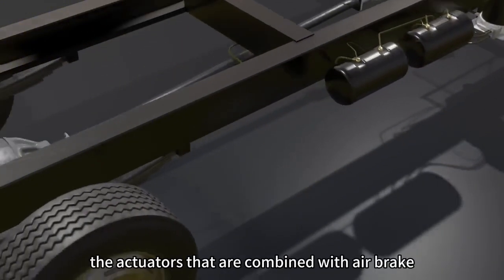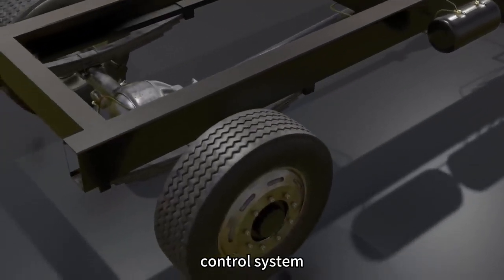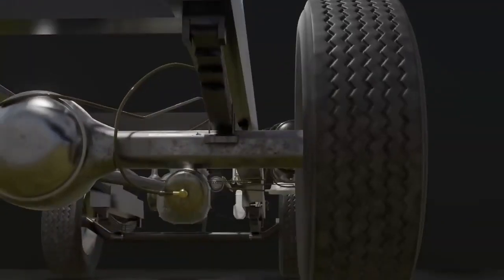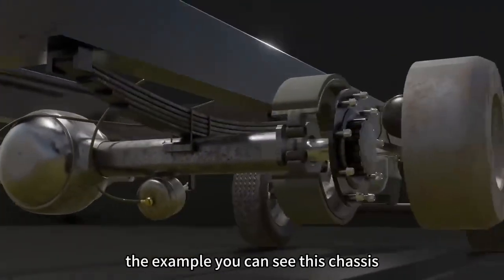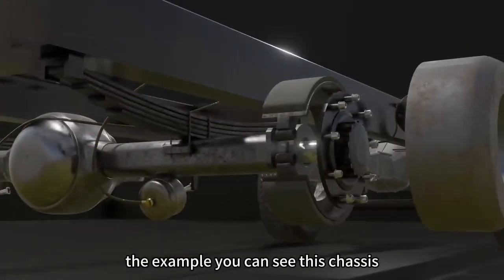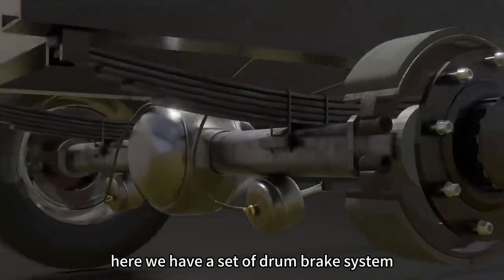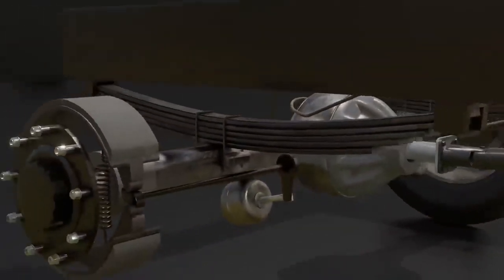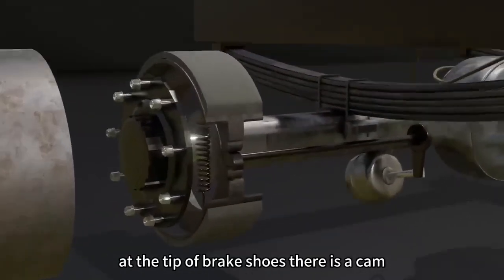Generally, the actuators that are combined with airbrake control system is drum brake system. For example, you can see this chassis. Here we have a set of drum brake system. At the tip of brake shoes, there is a cam.